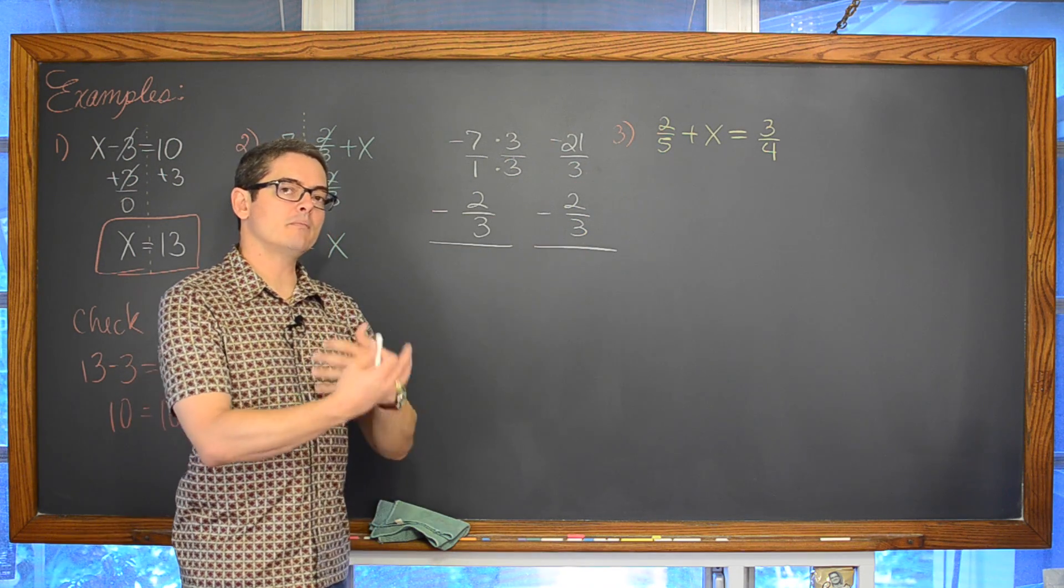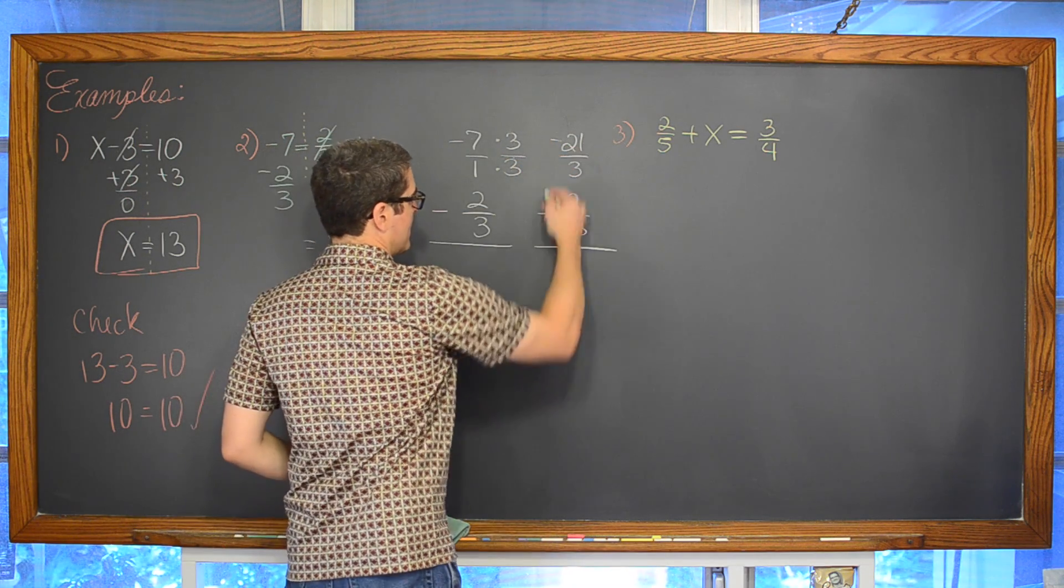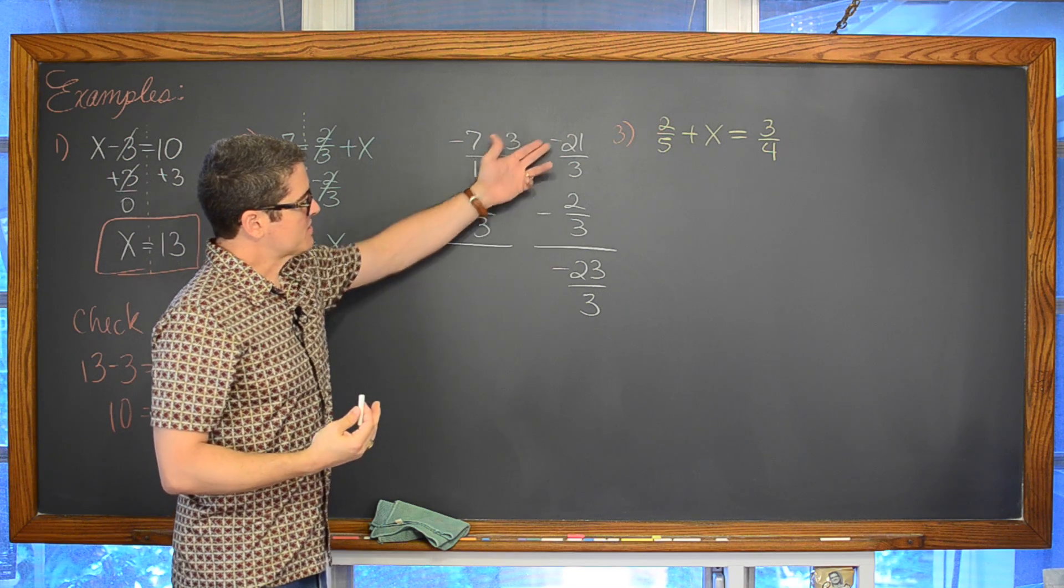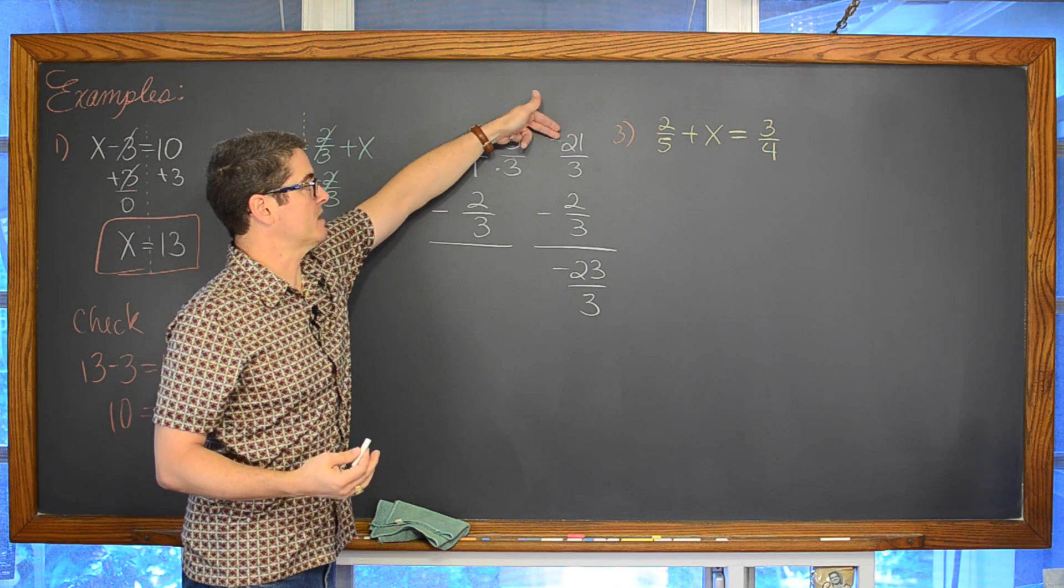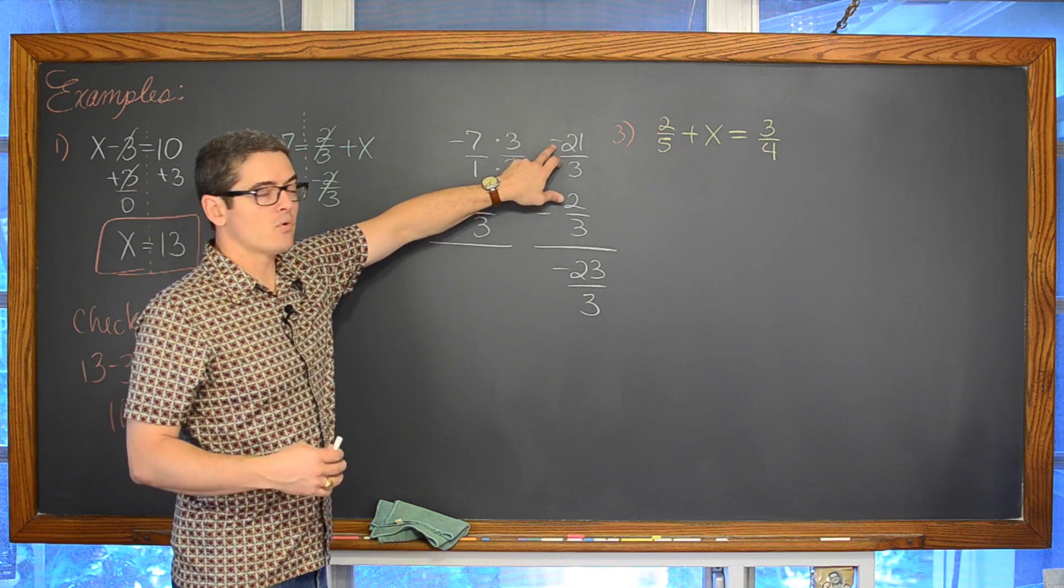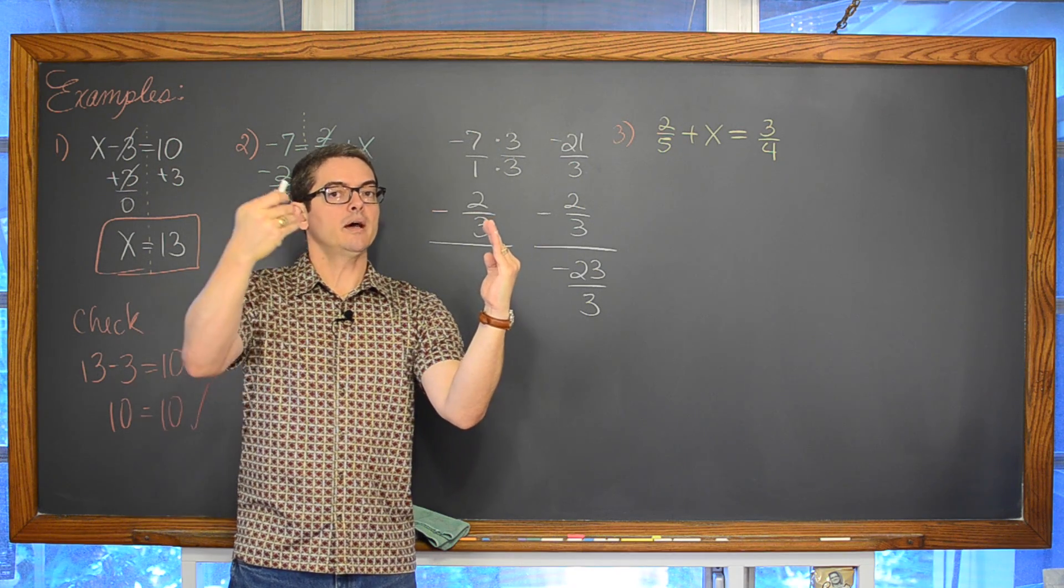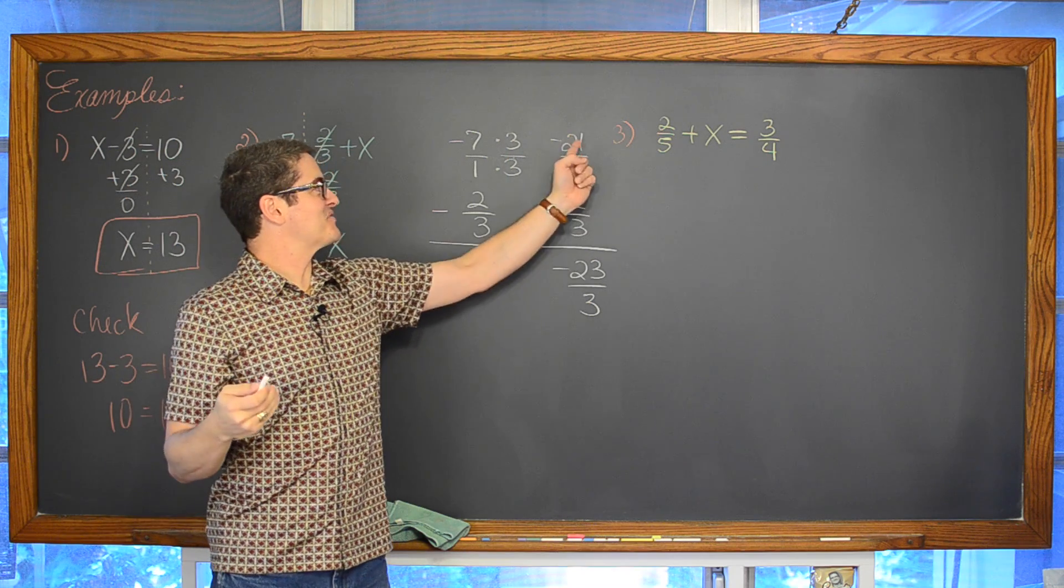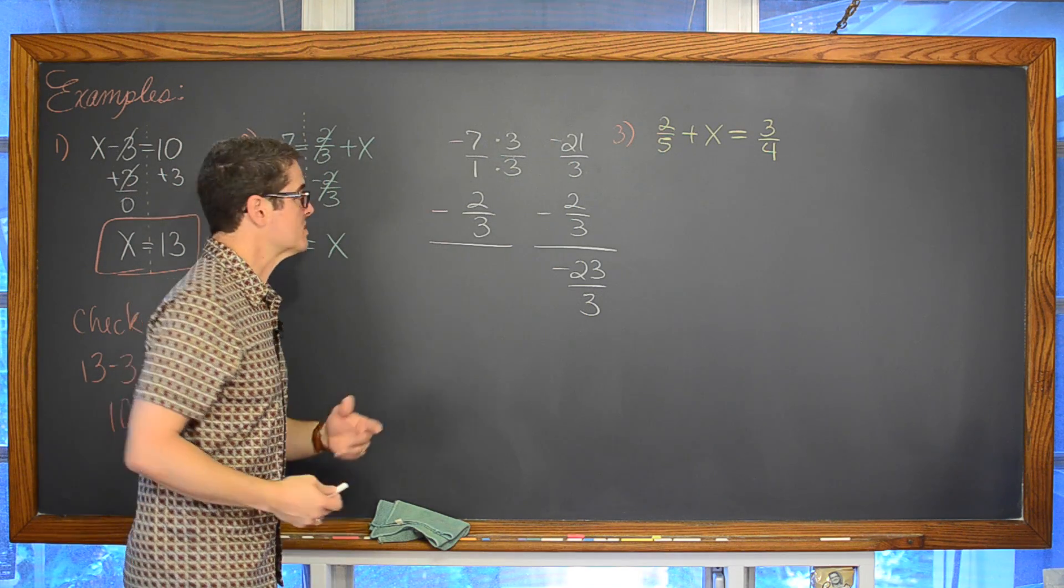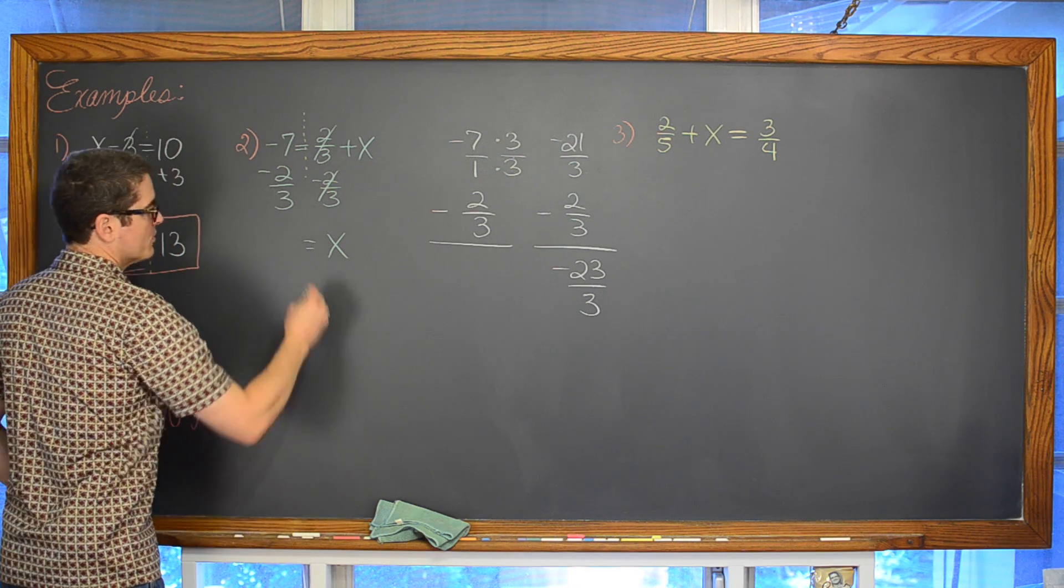Now that we have those common denominators, we are going to combine those numbers on just the numerator. So negative 21 minus 2, that is going to come out to be negative 23 over 3. Negative 21 minus 2 is the same thing as negative 21 plus a negative 2 if you would like to see it that way to give you the negative 23. Negative movements are a movement to the left on the number line. So if you are at zero and you move left 21 units for negative 21, and then two more units to the left, you are going to be at negative 23 on the number line. That is the result of doing negative 7 minus 2 thirds. That does come out to be negative 23 over 3.